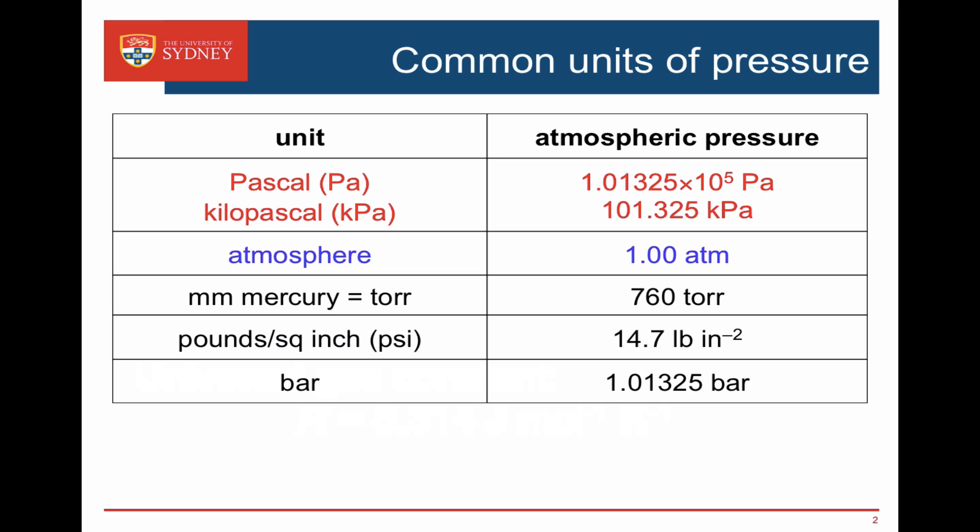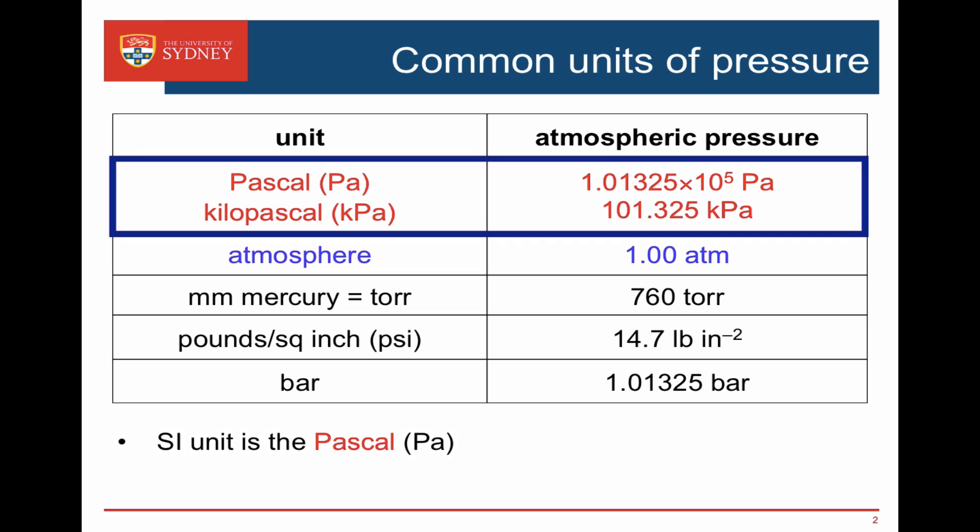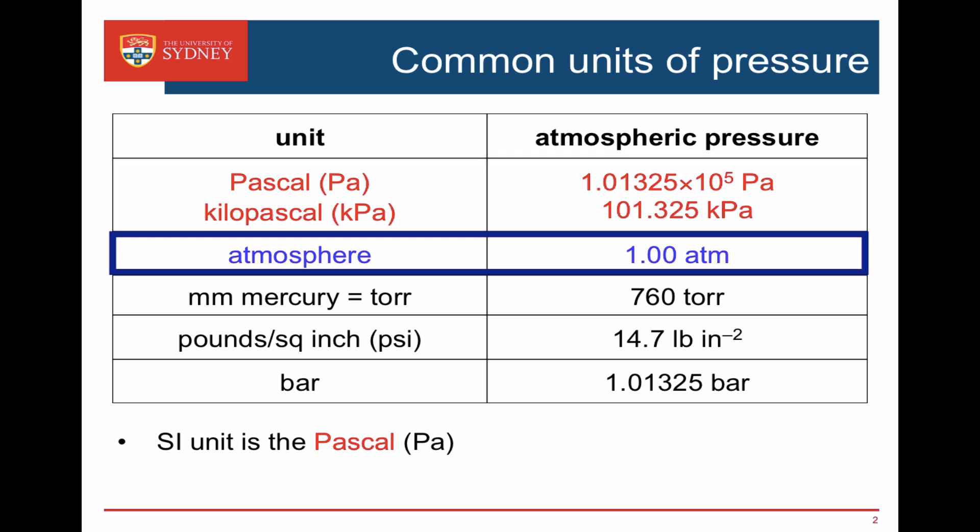There are lots of different units used for pressure. The SI unit is the Pascal. Atmospheric pressure is 1.01325 times 10 to the 5 Pascals. This is a pretty awkward value to have to use. So often people use the atmosphere. Atmospheric pressure is nicely one atmosphere so this is a really convenient value to use when we're talking about things at or near atmospheric pressure.